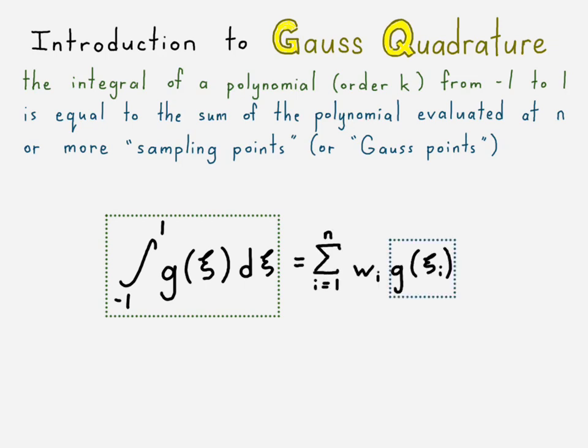And so it just kind of turns that into a summation. That integral goes away. Now we just have a summation. And that polynomial in the middle there is no longer integrated, but it's just evaluated at these specific sampling points or Gauss points.